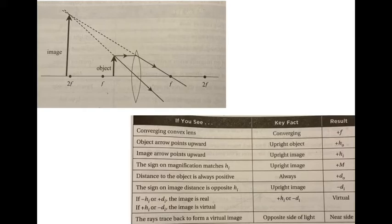As the object is moved from the focal point F toward the lens, the image decreases in size and moves toward the lens.